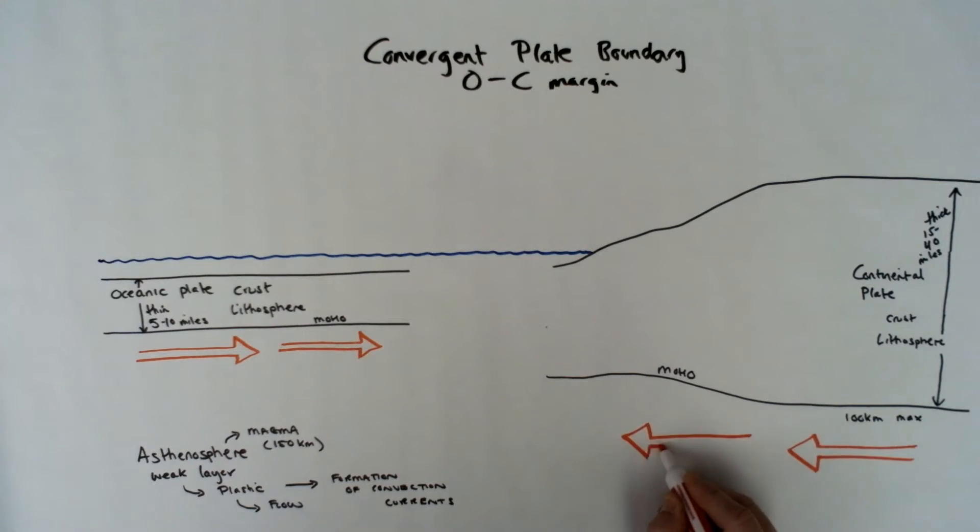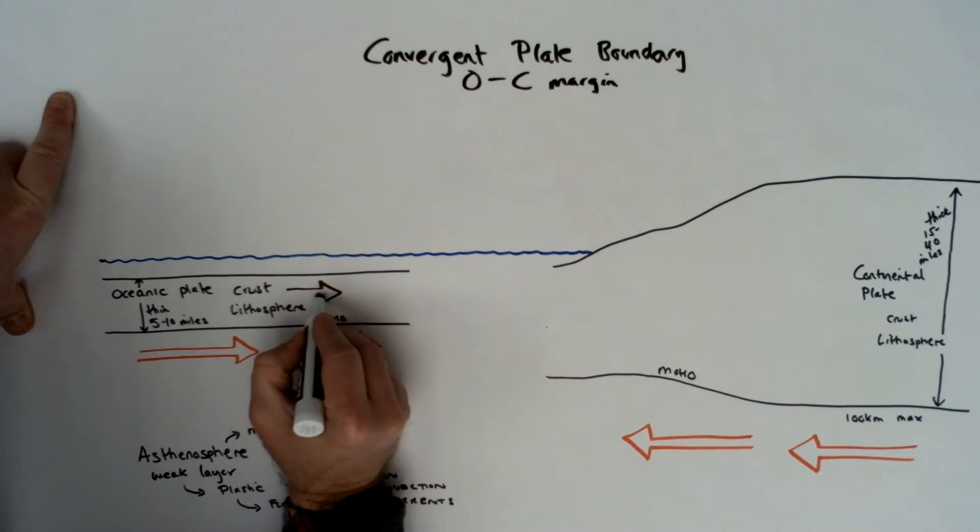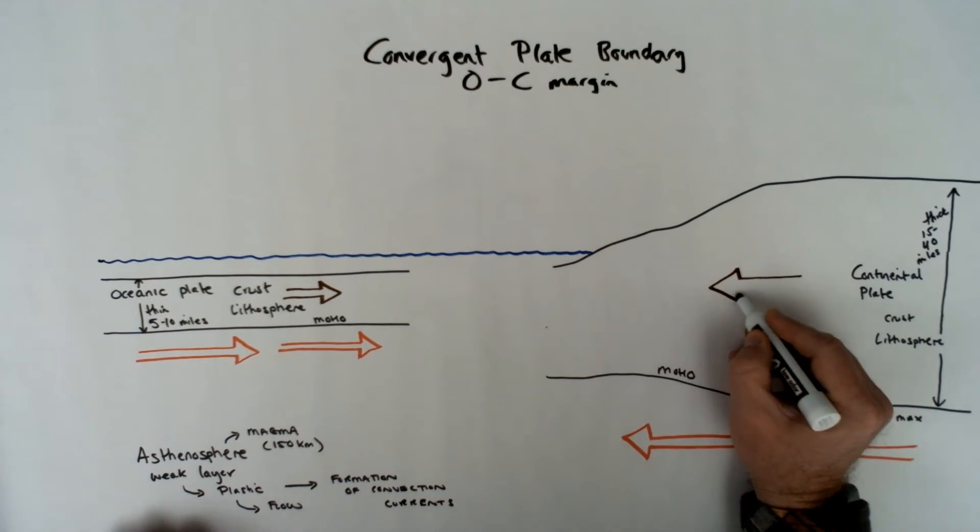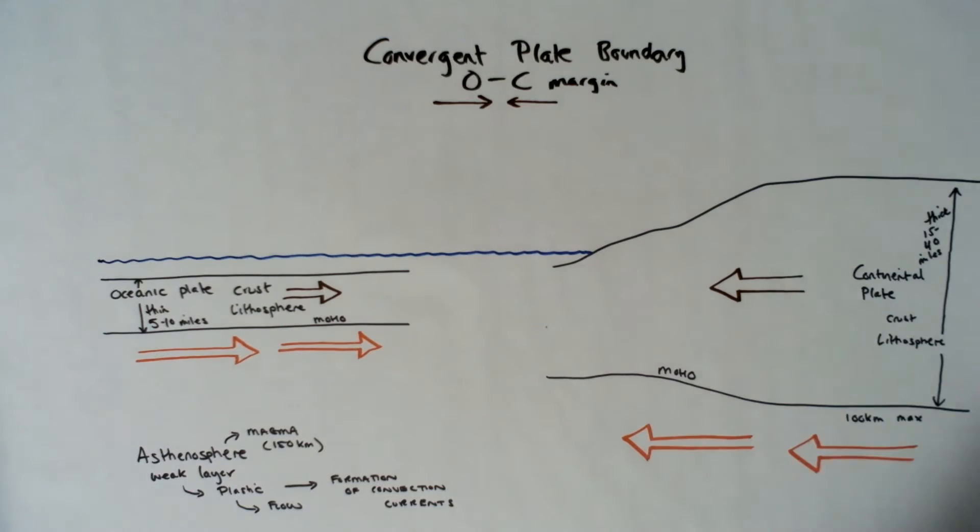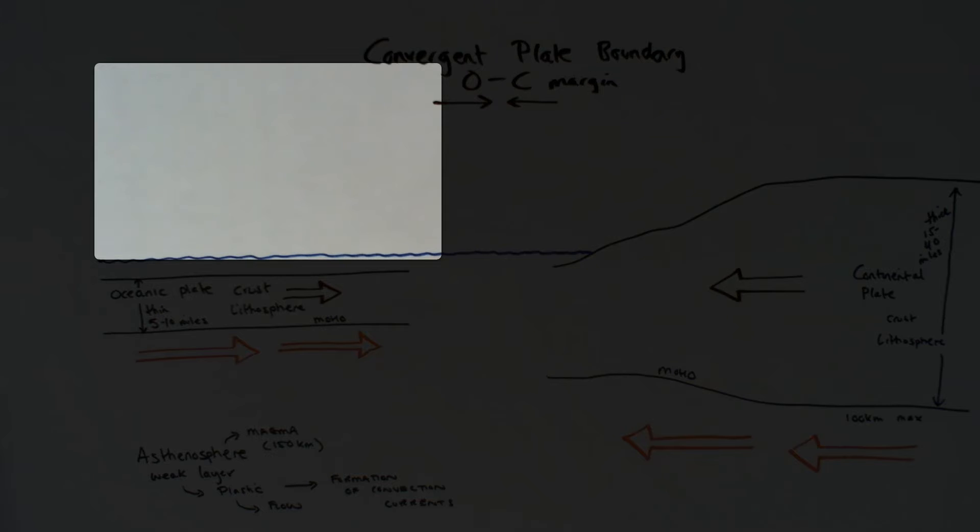In discussing plate tectonics and convection currents, the convection currents are going to move the plates. In this case, they're going to move towards each other in a collision or convergent situation. To really understand what happens when these two plates collide, you need to understand density. Density is mass over volume.